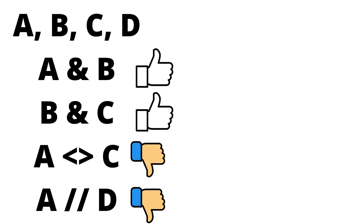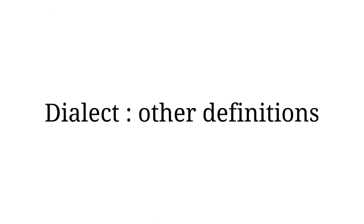In other words, if there are adjacent dialects A, B, C, and D, then A and B can understand each other, B and C can understand each other, but A and C may have difficulty understanding each other, and A and D definitely cannot understand each other.